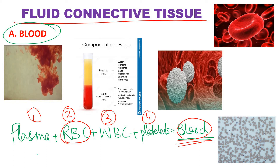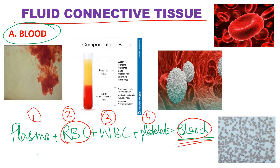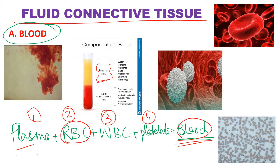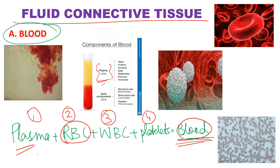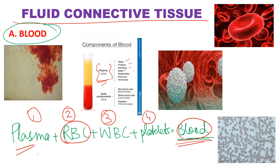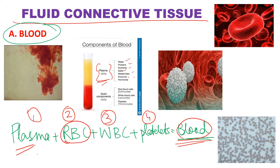Now we shall see them one by one. Blood consists of plasma. Plasma is the watery or liquid substance in the blood. It consists of water, protein, nutrients, salts, various metabolites, enzymes, and hormones present in that liquid substance which is the plasma.